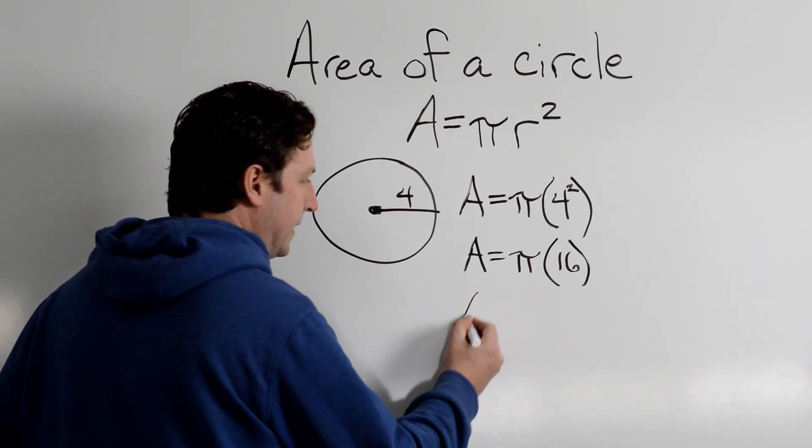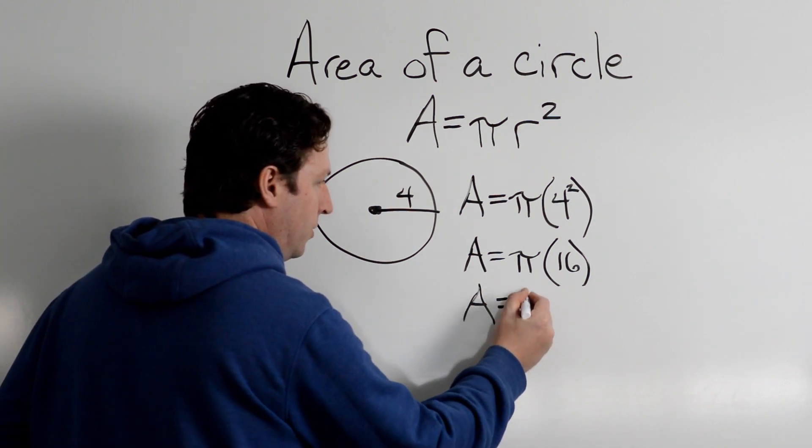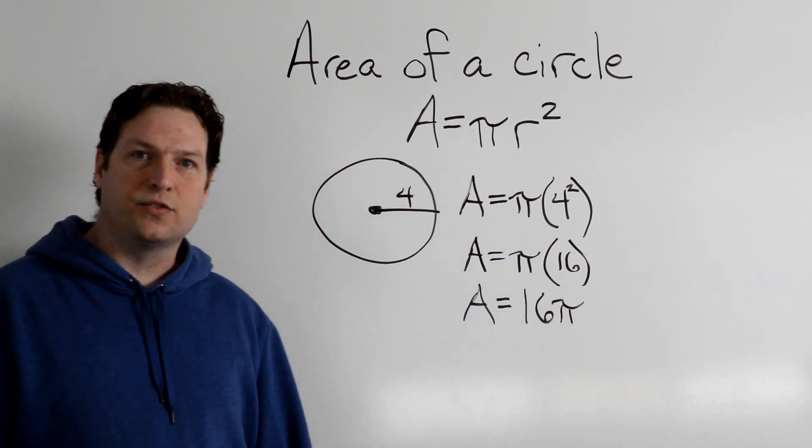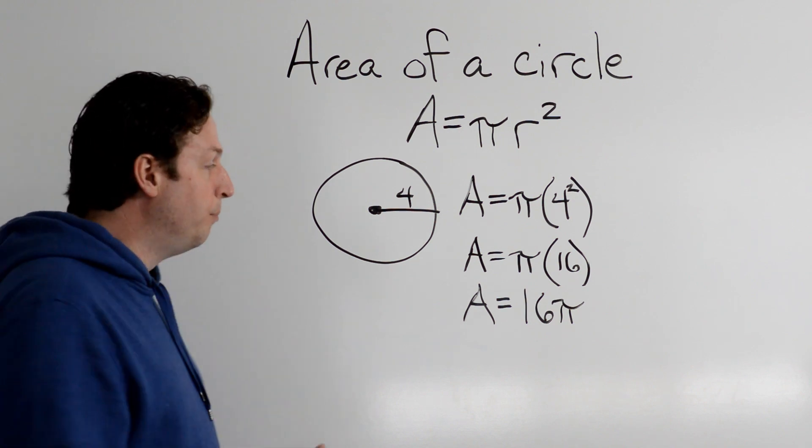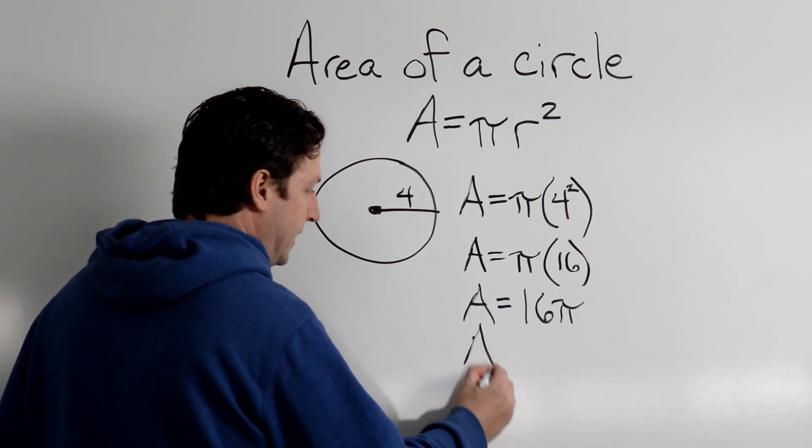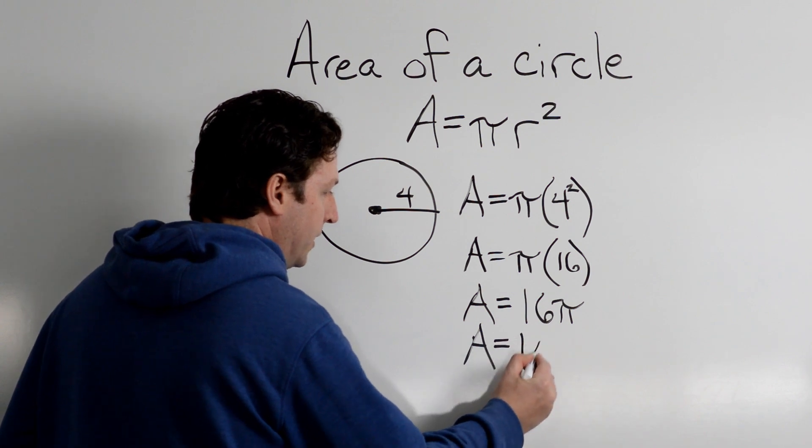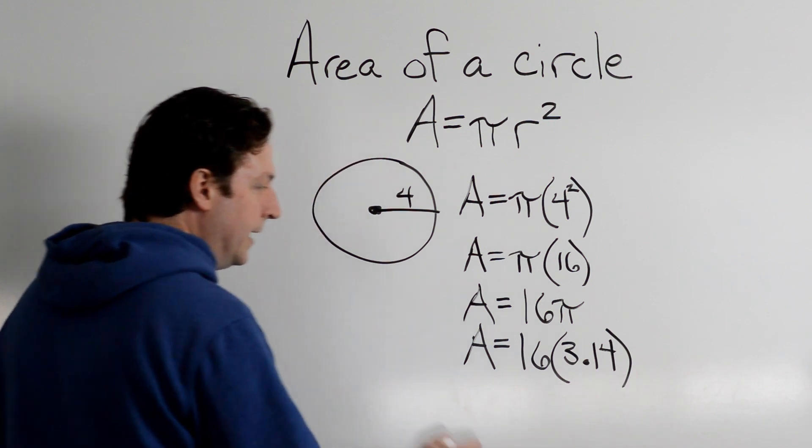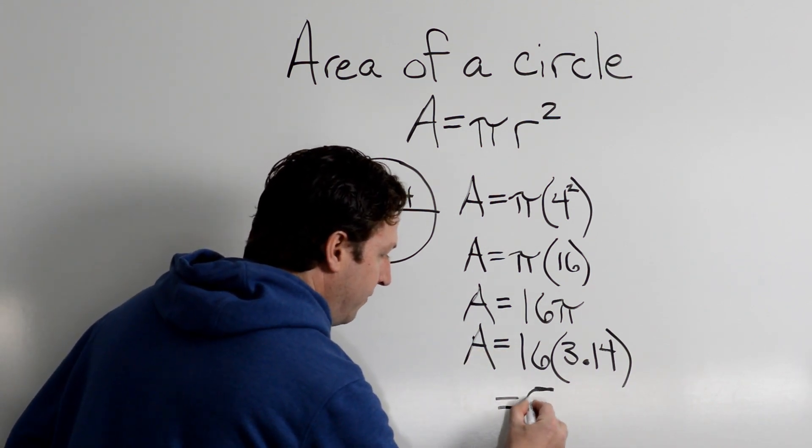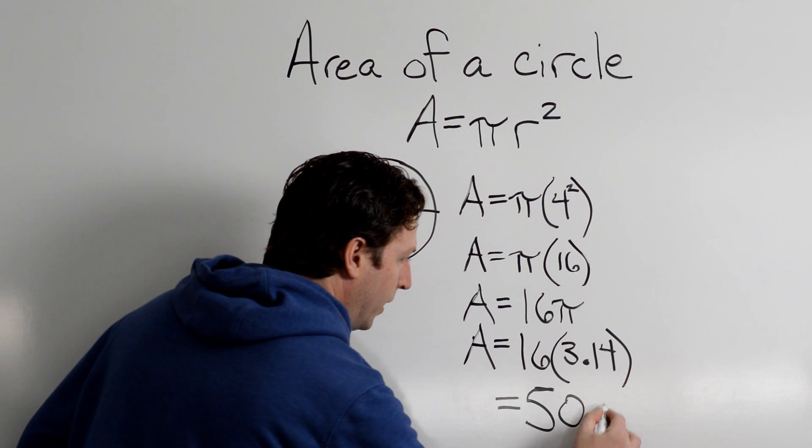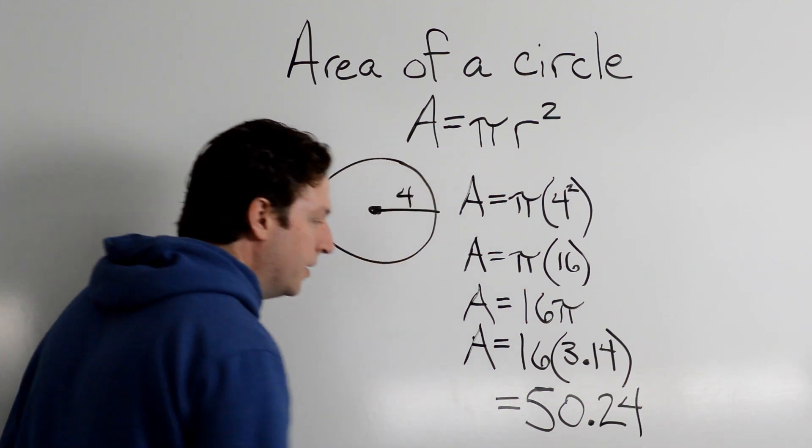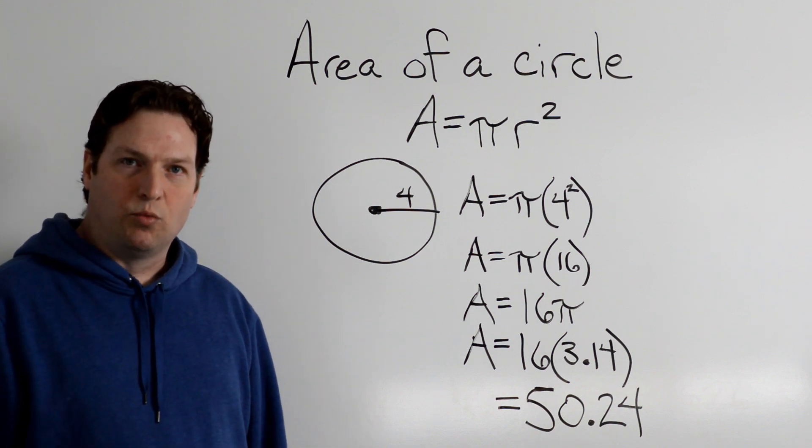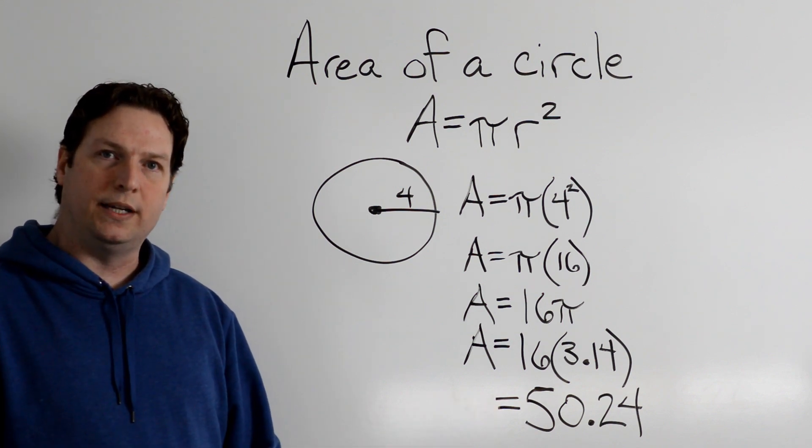Now you can write the answer two separate ways. We could say that the area of this circle is 16 pi. That answer works for a lot of situations. But if you want to take it one step further, you would say that the area equals 16 times 3.14, and that is going to give me 50.24. So the area of a circle with a radius of 4 is going to be 50.24.